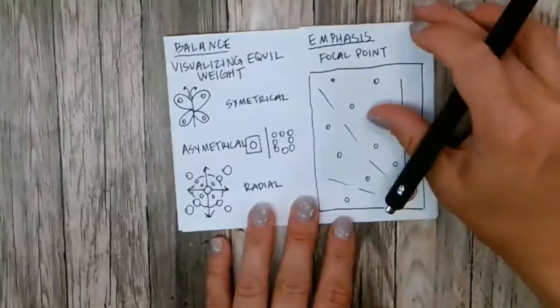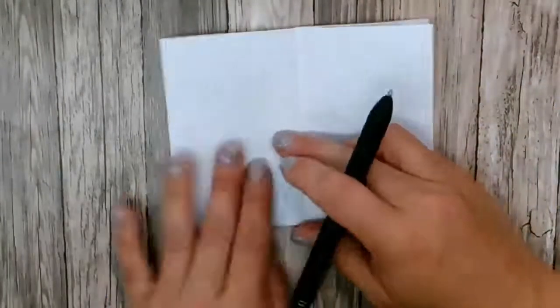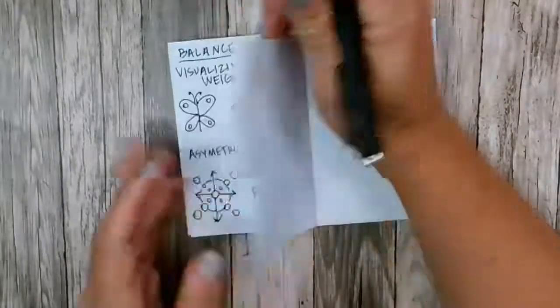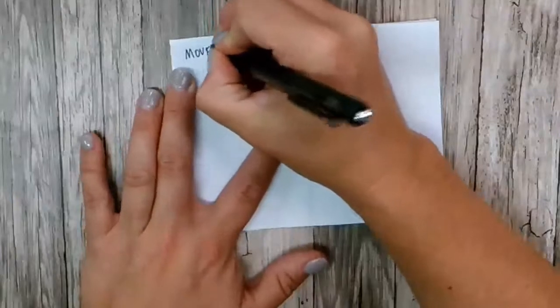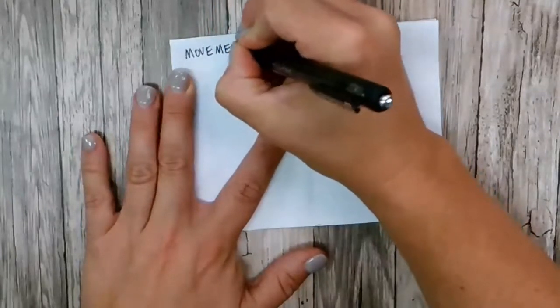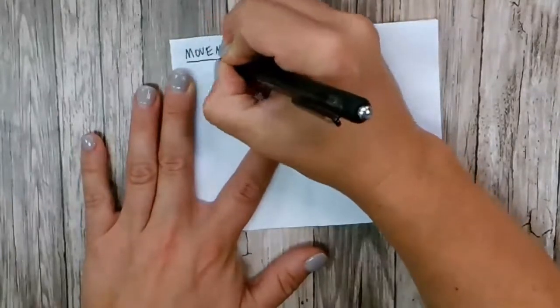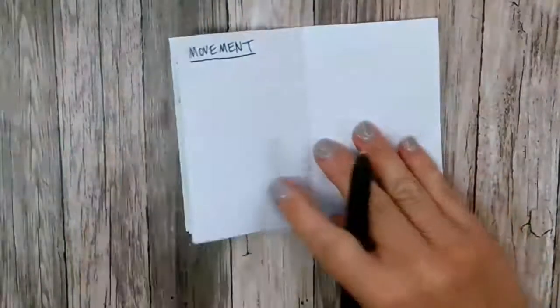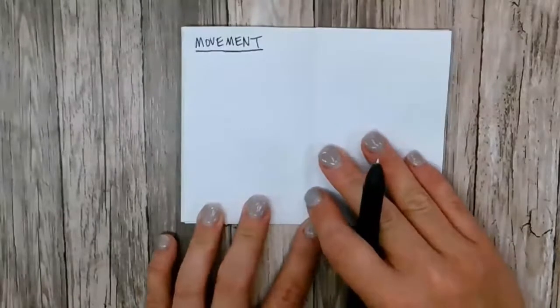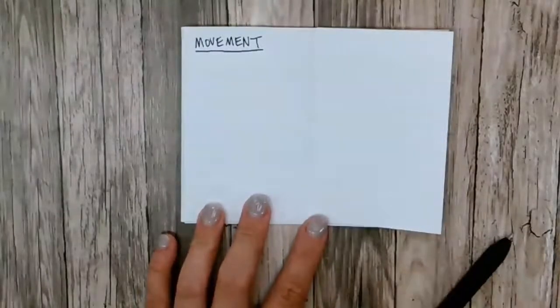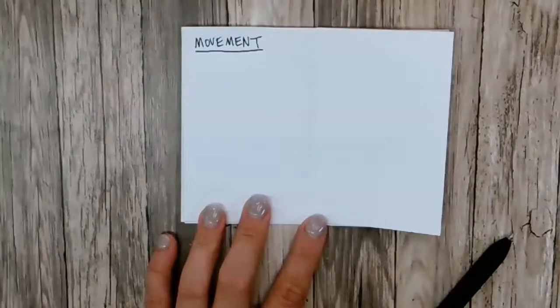We're going to flip the page, and the next one we're going to do is movement. Now this doesn't mean that the piece actually moves, like a mobile. Movement means that you are moving the viewer's eye across the picture plane.